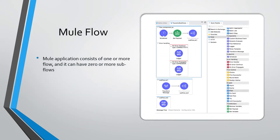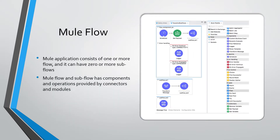When we write code for a Mule application, we need to create a flow. We can also have subflows as well, but at least one flow is required to write the code for a Mule application. You can have multiple flows, and we can have zero or more subflows inside the Mule application. Inside each flow or subflow, we use components and operations provided by connectors and modules to complete the flow code.